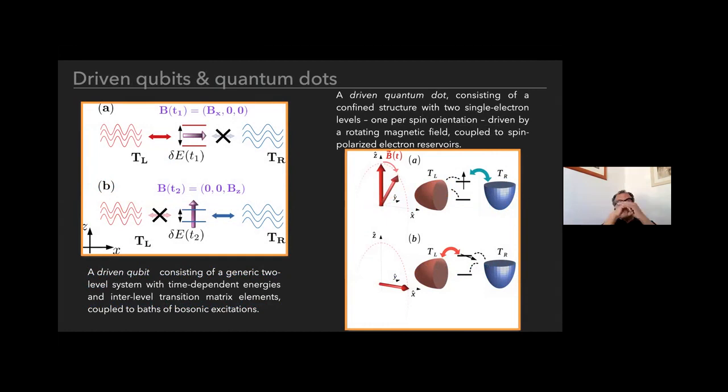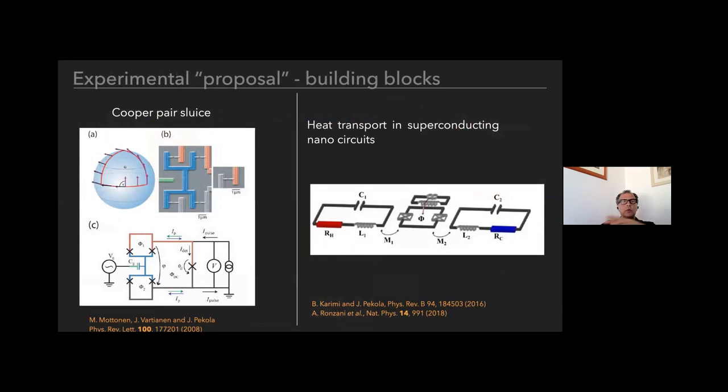I think I'm almost done with the time, so I will skip this. We studied details of examples in which we consider simple two-level systems coupled either to boson or fermion reservoirs, and we looked in some details—because of time constraints I would like to skip the results and just come to this part which might be interesting.